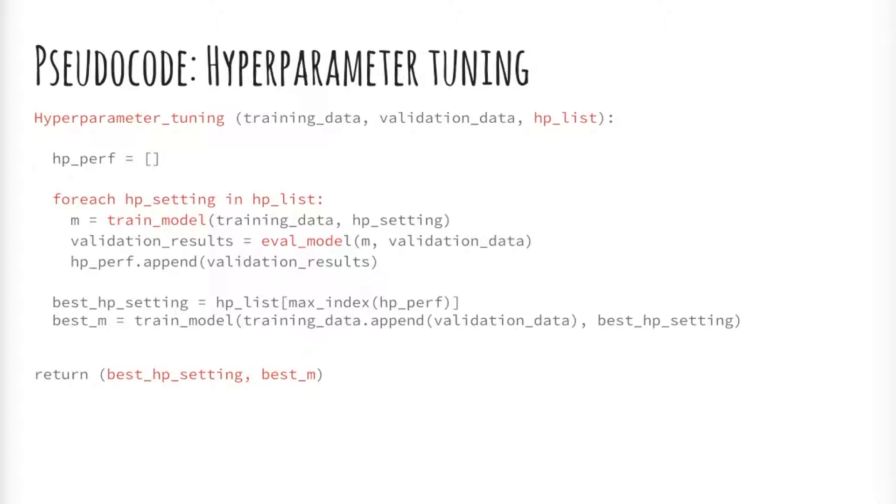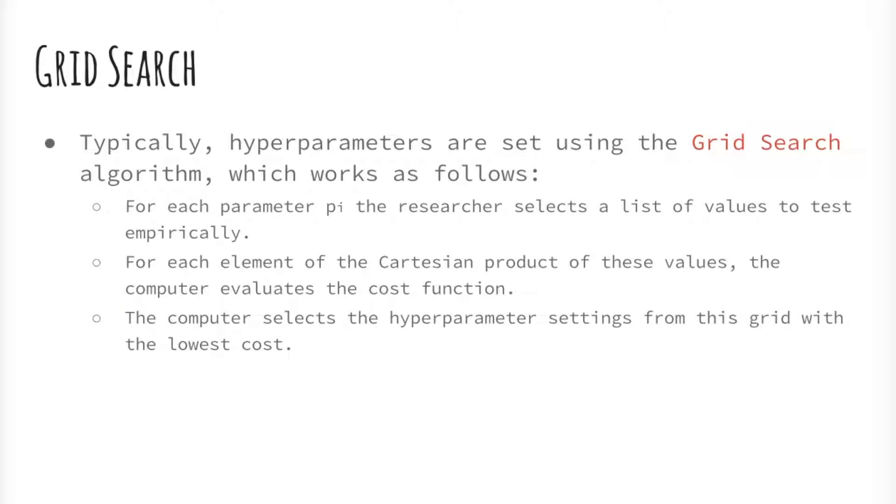Conceptually, hyperparameter tuning is an optimization task like model training. However, these two tasks are quite different in practice. When training a model, the quality of a proposed set of model parameters can be written as a mathematical formula, usually called the loss function. When tuning hyperparameters, however, the quality of those hyperparameters cannot be written down in a closed form formula because it depends on the outcome of a black box model training process. This is why hyperparameter tuning is much harder. Up until a few years ago, the only available methods were grid search and random search. In the last few years, there's been increasing interest in auto-tuning.